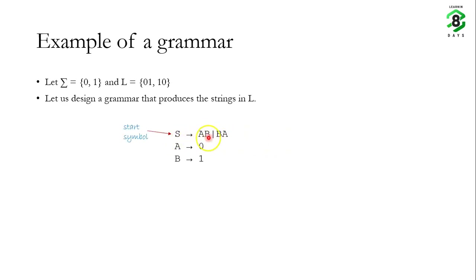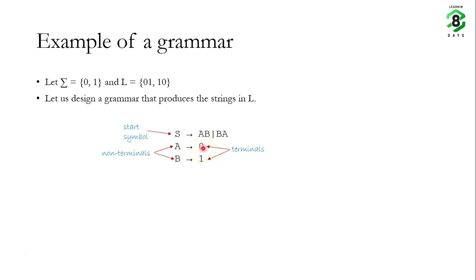The first production rule says S → AB or BA. S is called a start symbol. Just as a machine has an initial state, a grammar has a start symbol, usually denoted by capital S. Whenever you see a capital letter in a production rule, you should understand it is a variable or non-terminal — for example, A and B are non-terminal symbols. A non-terminal can be replaced by some other thing: either another non-terminal, or terminals like 0s and 1s, or a combination. Whenever you see digits or lowercase symbols, by convention these are terminals. In this example, the non-terminals have been replaced by terminals.